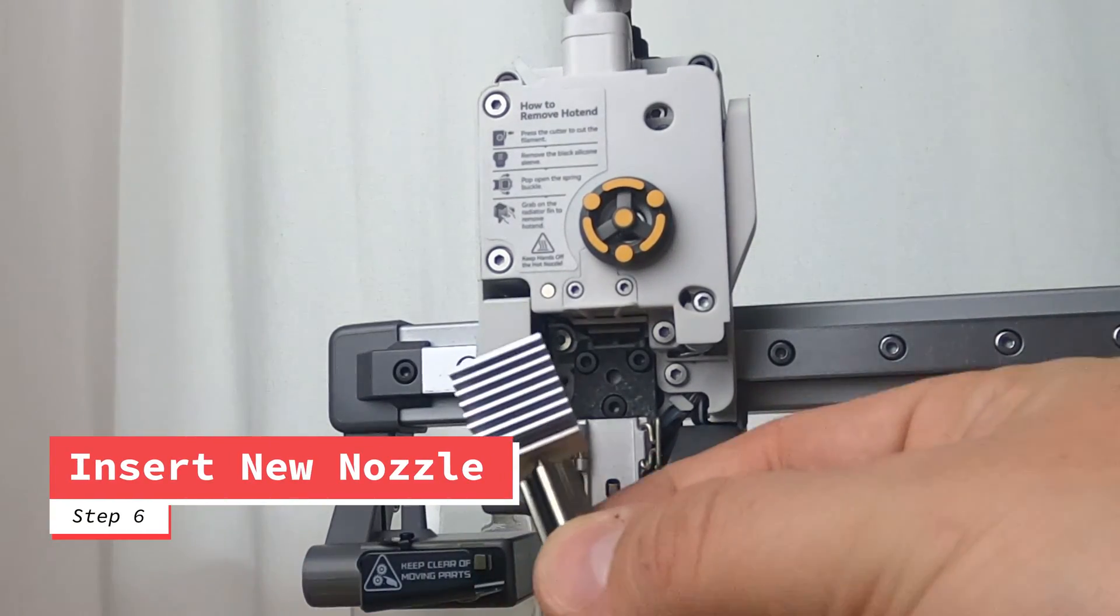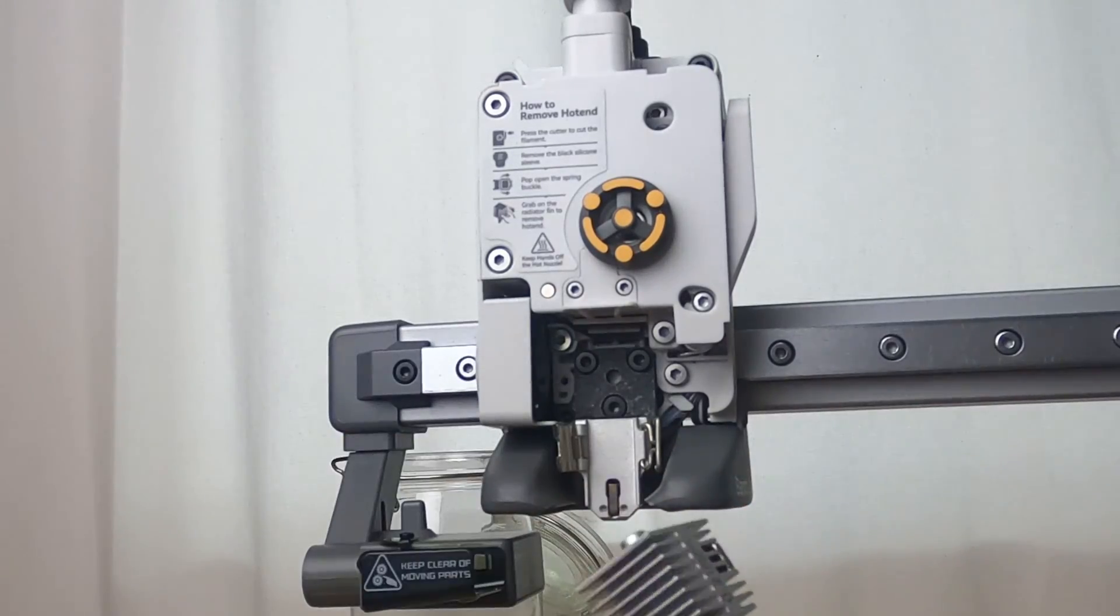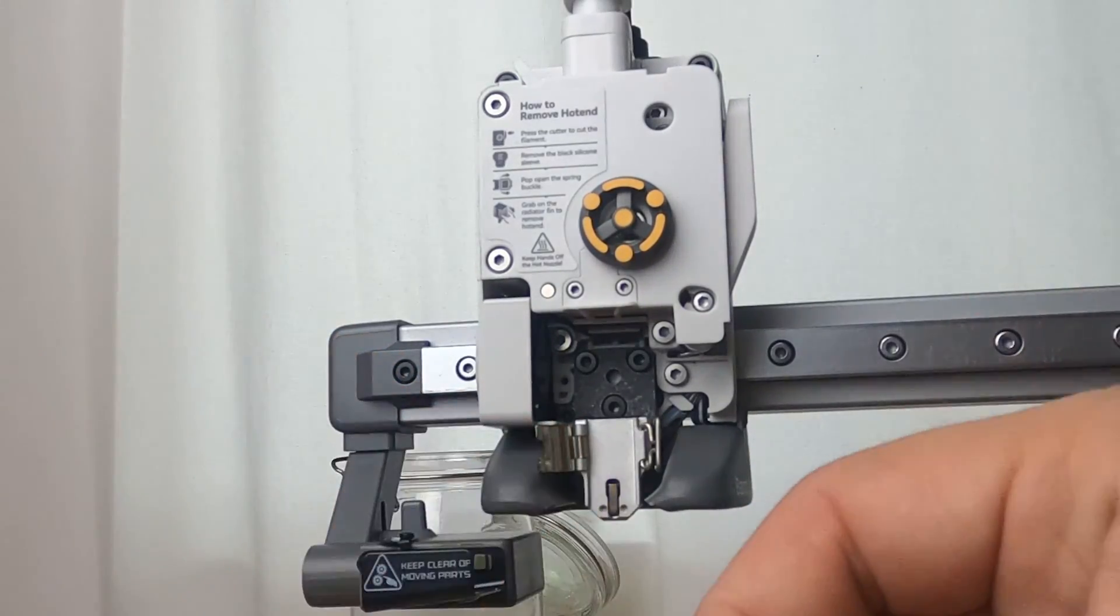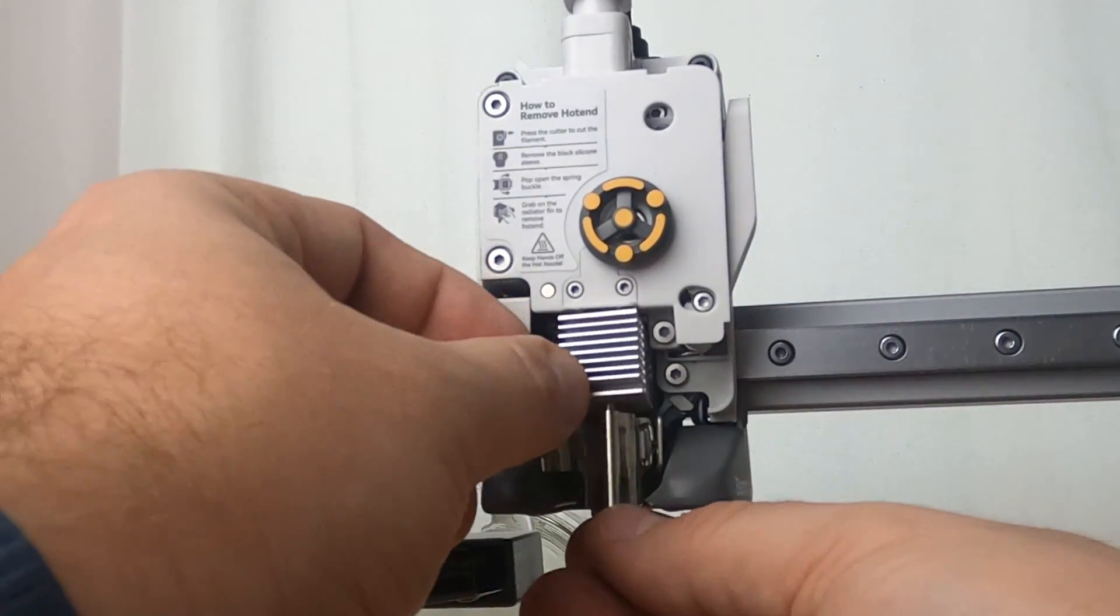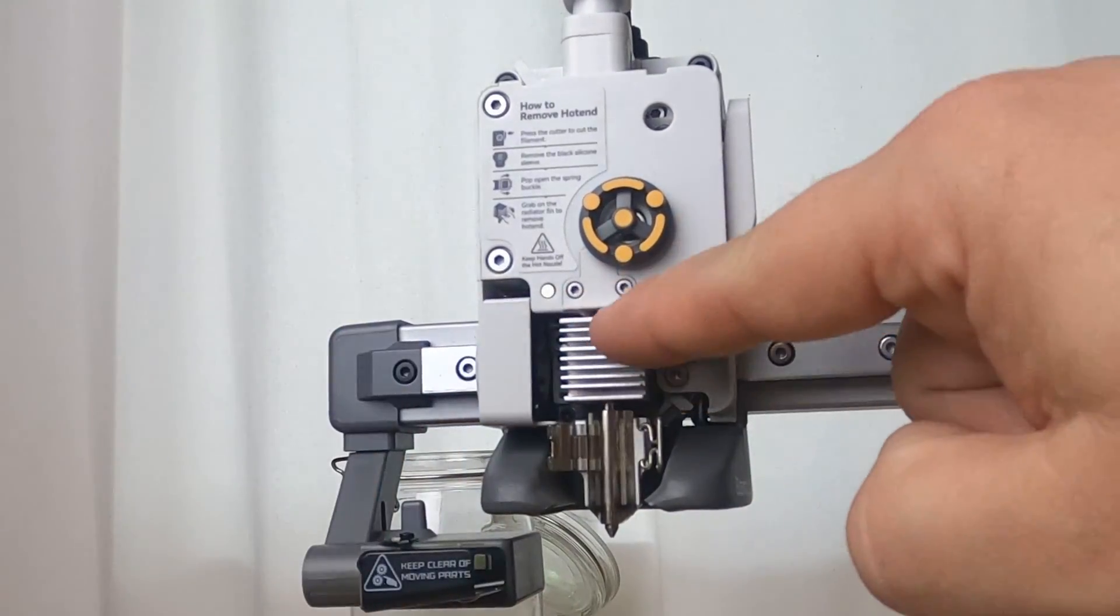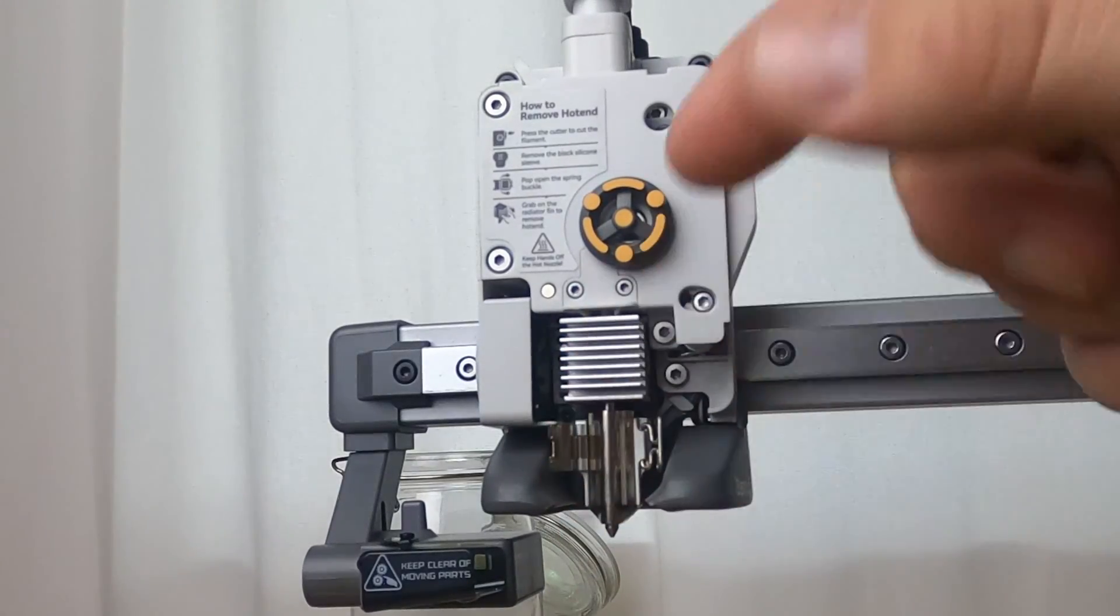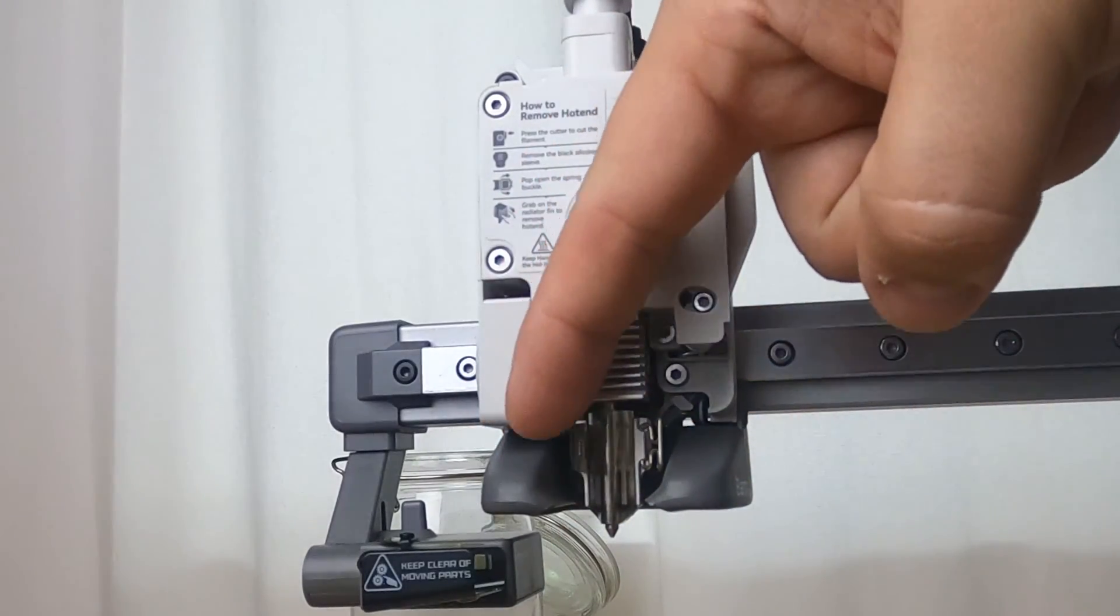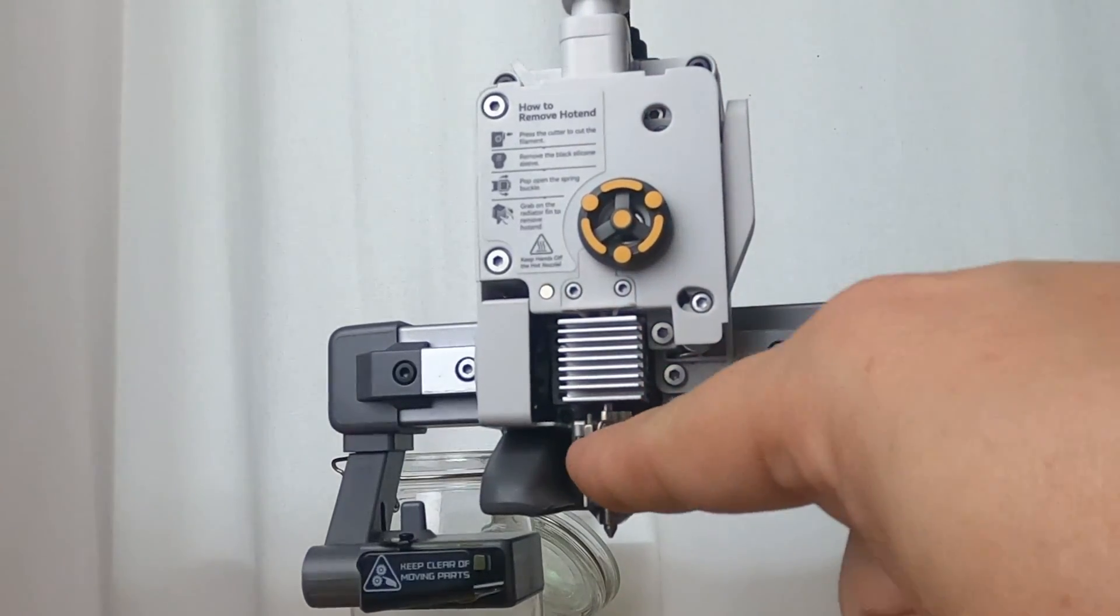So we're going to now do the same steps we did before but in reverse. This time we're going to make sure that our gate is open and the latch is open. We're going to go ahead and put our nozzle into its spot. And once it's snugly up here, you'll check to make sure it's snugly placed down here. And you're going to move the gate back over and then you're just going to go ahead and close the latch.